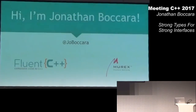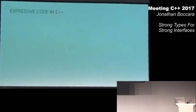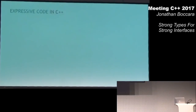My name is Jonathan Boccara. I run the blog Fluent C++, and I work at Murex as a C++ developer — been doing that for six years. What keeps me up at night is searching for how to write expressive code in C++. By expressive code, I mean code that, when you read it, you understand the intent of the person who wrote it. I think that's the most desirable technical characteristic of a piece of code, and more generally of a codebase for its survival.